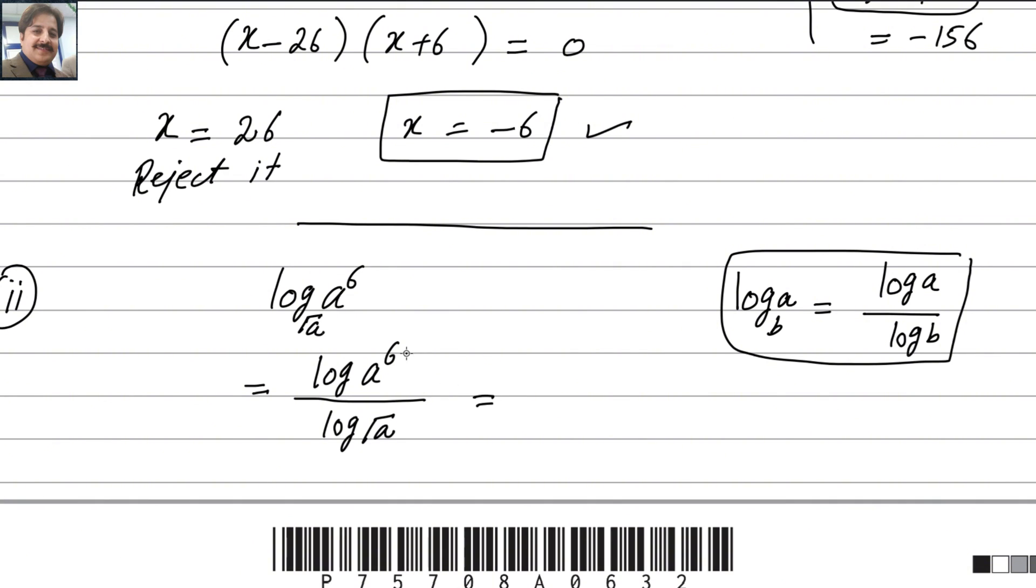And now we can bring this power. This power becomes the multiple by the law of logarithm: 6log(a). And here you can write as log(a^(1/2)). You know that square root is power 1/2. Therefore we can write as 6log(a) divided by - this half becomes the multiple of log(a). You know that by the law of logarithm, this log(a) will cancel out.